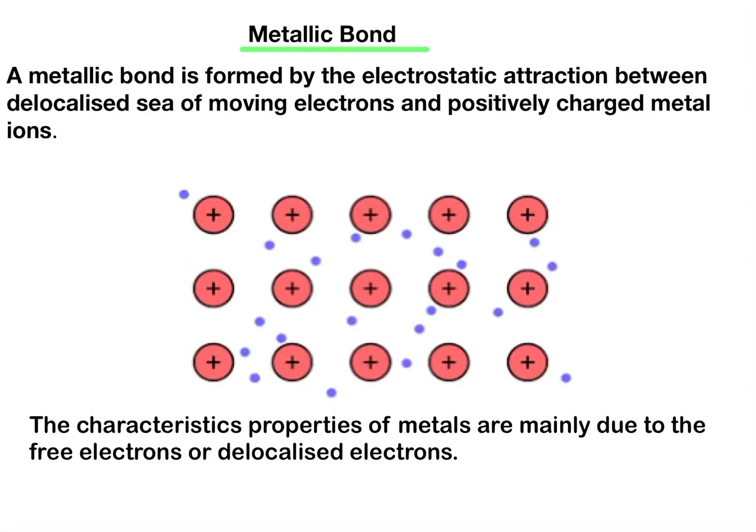Today we are going to study about metallic bonding. A metallic bond is formed by the electrostatic attraction between a delocalized sea of moving electrons and positively charged metal ions.